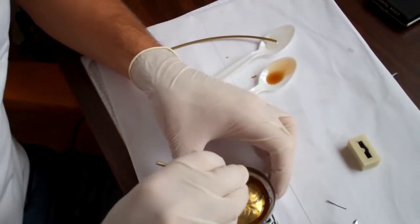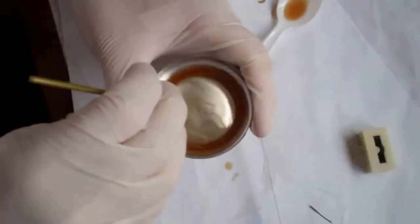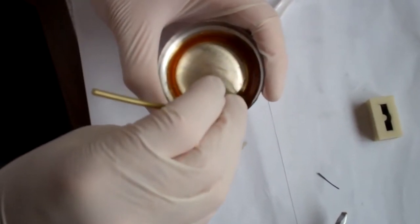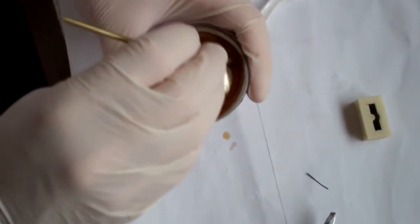Now we're going to mix slowly and for ten minutes. The reason why we're mixing slowly is to prevent the bubbles. Another method of getting the bubbles out is using a vacuum chamber.